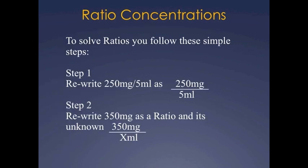To solve ratios, you follow these simple steps. Step one, rewrite 250 milligram per 5ml as a ratio and its unknown. So you would write 350 milligrams over x ml.